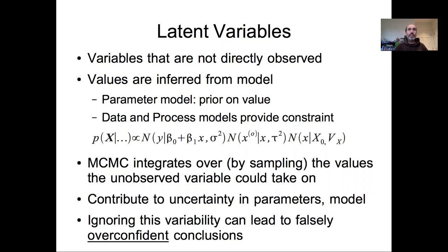We're going to do this again using the idea of latent variables. These are variables that are not directly observed, so a missing x is clearly an x that is not directly observed. Latent variables are always inferred from the models based on the combination of the prior and the data and process models.